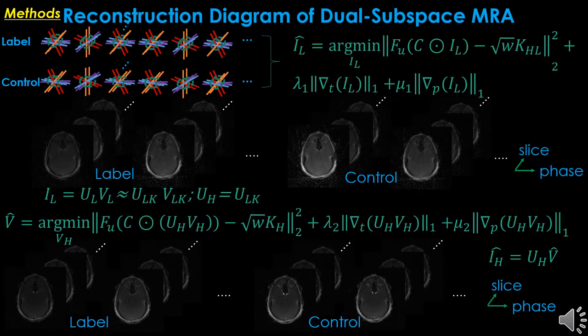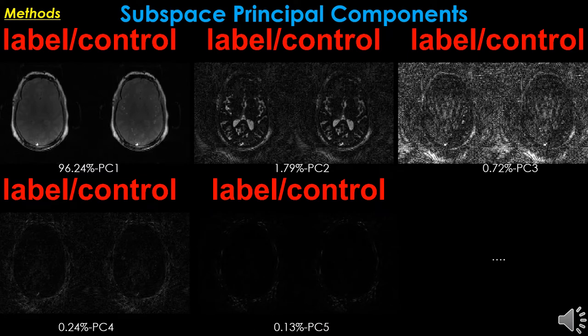Here is the image reconstruction flowchart of dual subspace MRI, which consists of three parts: low-resolution image reconstruction with temporal and phase TV constraints; principal component analysis for the main components; and high-resolution image restoration using subspace concepts. Here are the main principal components of low-resolution reconstructed images — we can see that the main energy is distributed in the first few principal components.